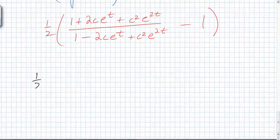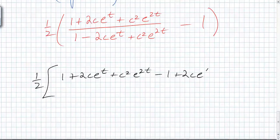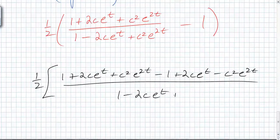So we end up with one plus two c e to the t plus c squared e to the minus one plus two c e to the t minus c squared e to the all over one minus two c e to the t plus c squared e to the 2t. Now, does anything cancel?